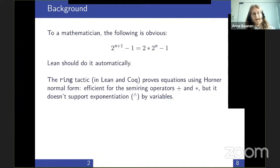In Lean, there is a tactic based on the ring tactic by Maboubi and Grégoire in Coq, which uses the Horner normal form to prove equations in a ring or semi-ring. It supports the operators plus and times, but in this equation above, we also have exponentiation by a variable n.